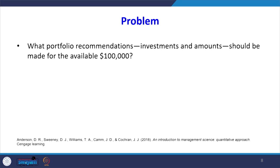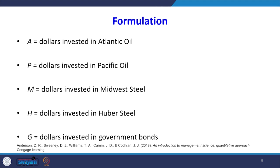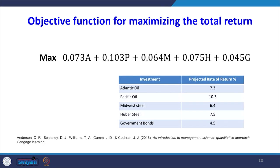We have $100,000 and must decide where and how much to invest. We define 5 decision variables: A = dollars invested in Atlantic Oil, P = dollars invested in Pacific Oil, M = dollars invested in Midwest Steel, H = dollars invested in Huber Steel, and G = dollars invested in government bonds. Our objective function is maximization of return.